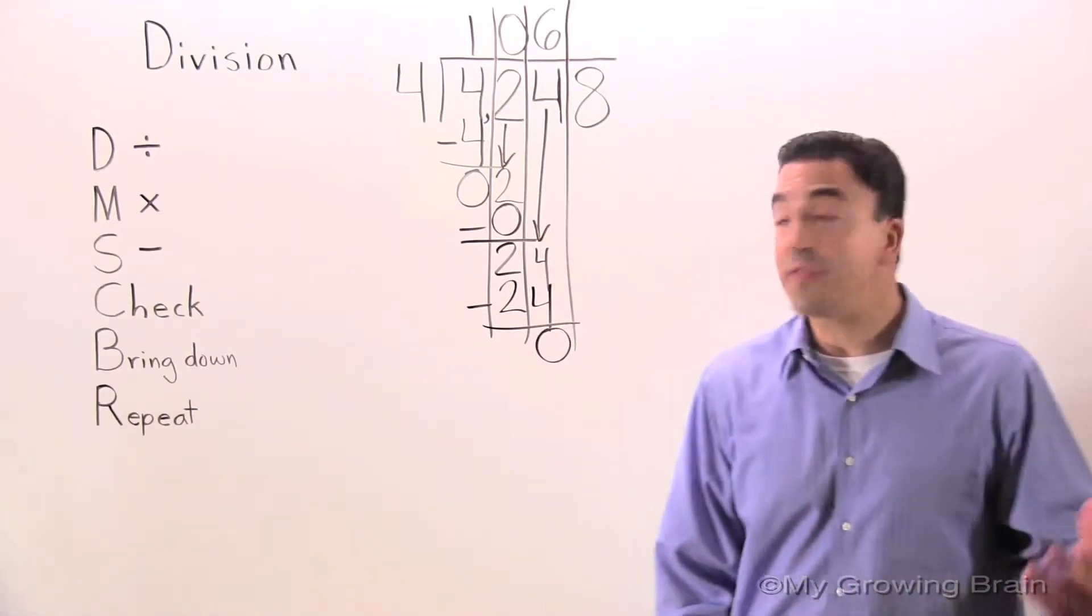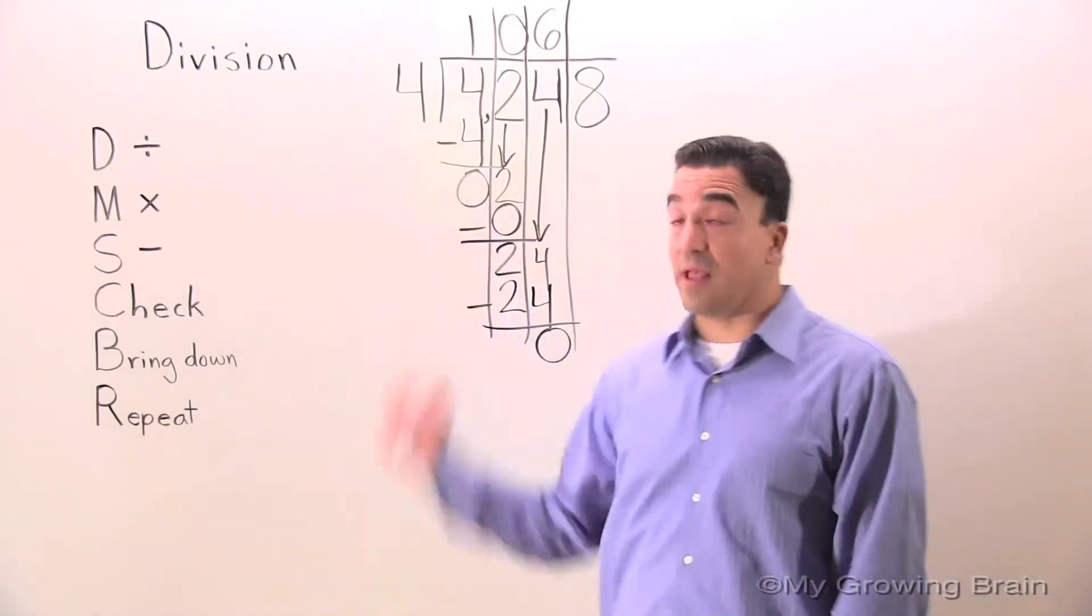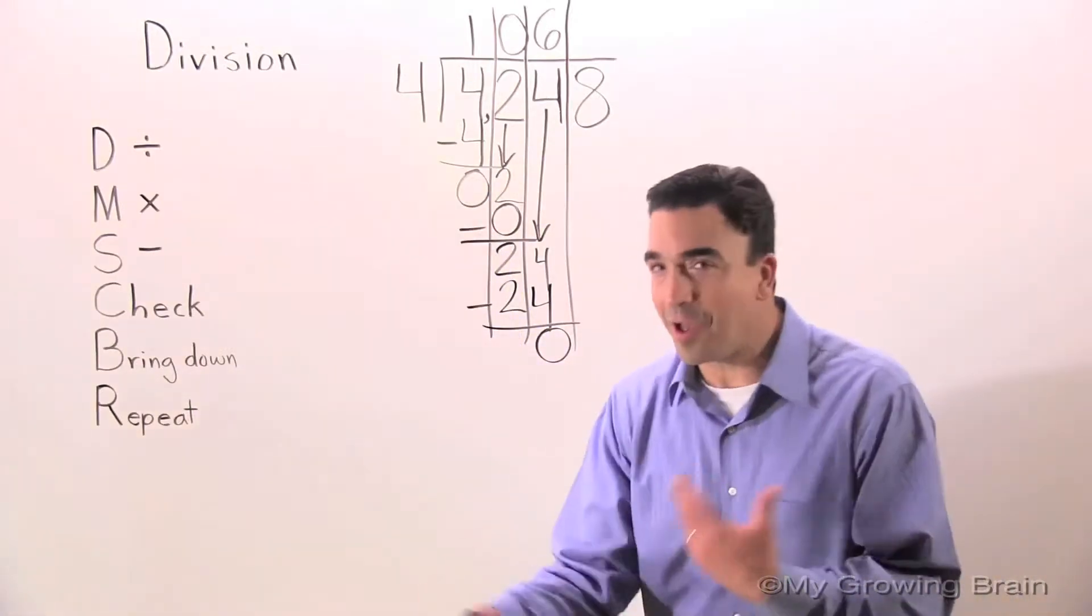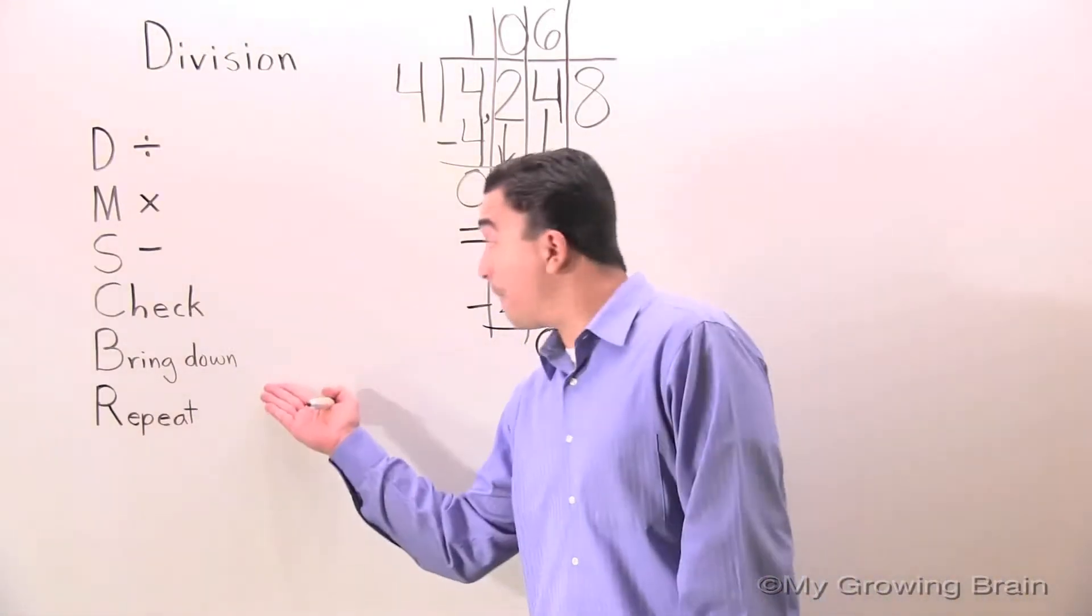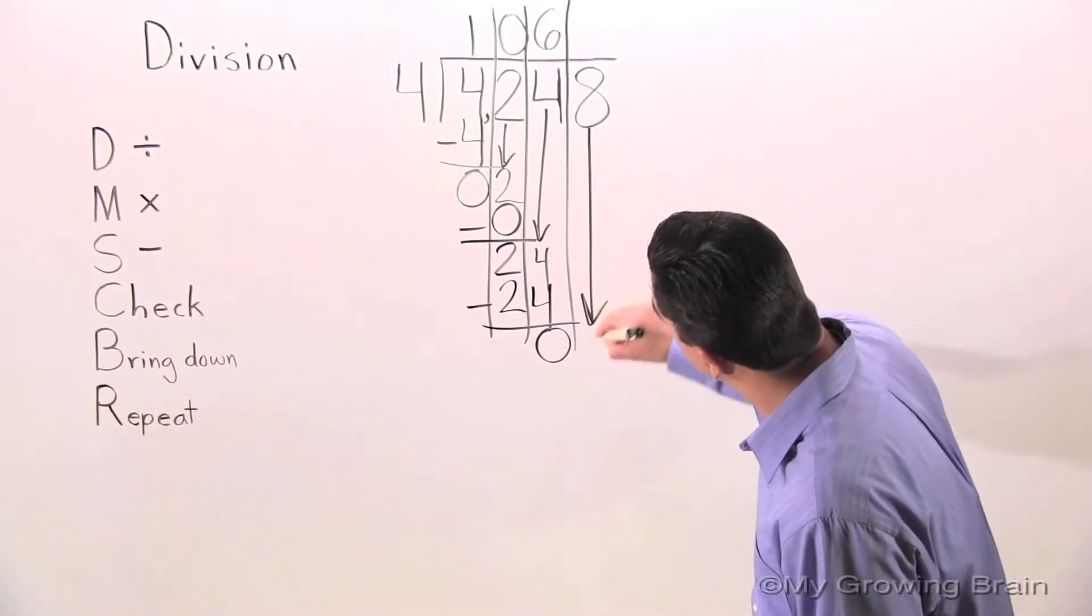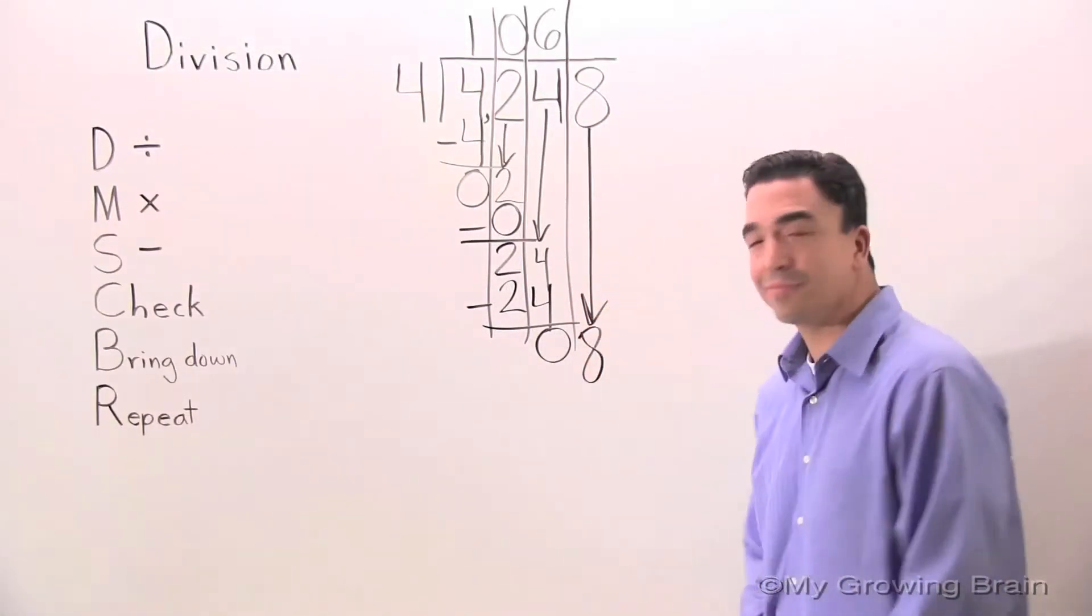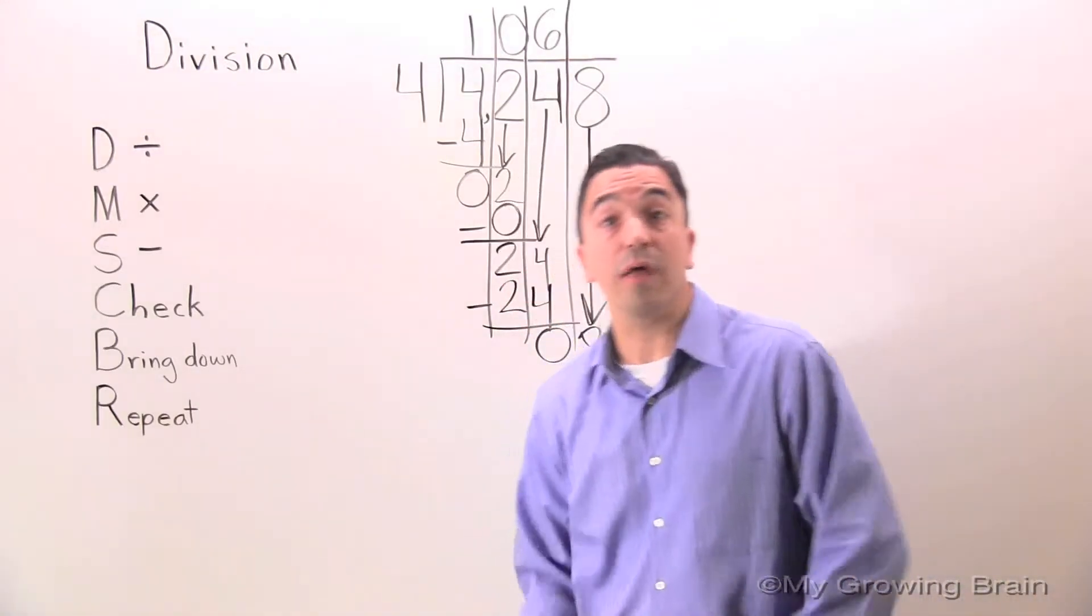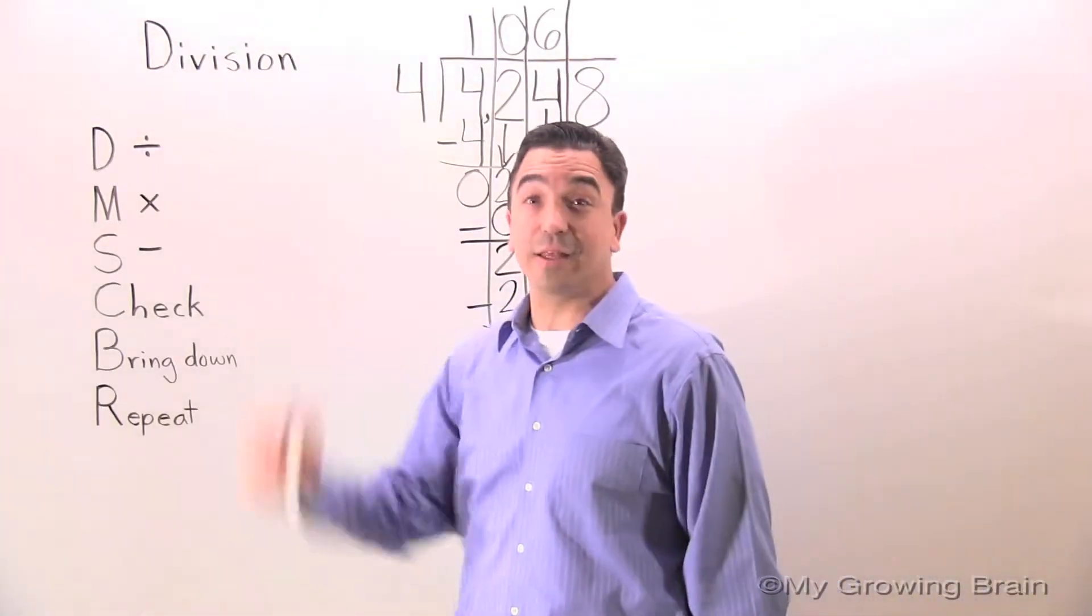Next step: check. 0 is less than 4, keep on going. Next step: bring down. Next step: repeat the process all the way, back to the top.